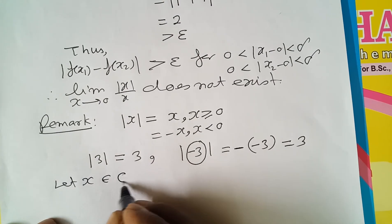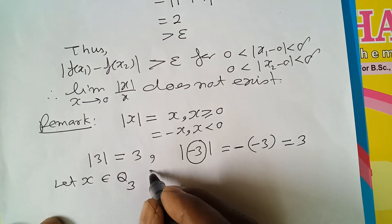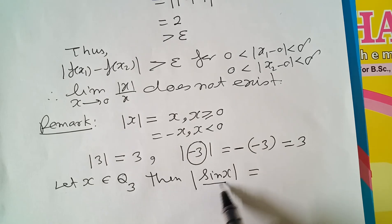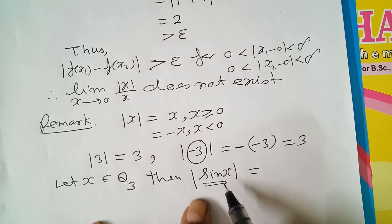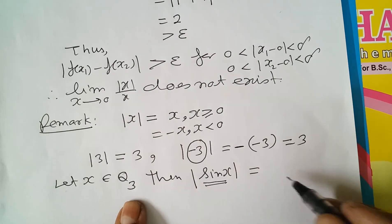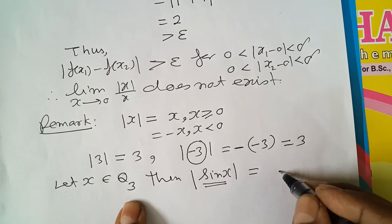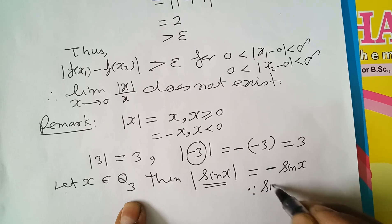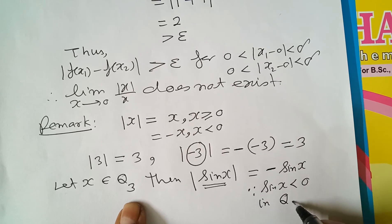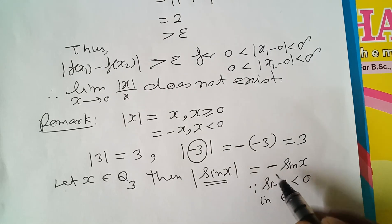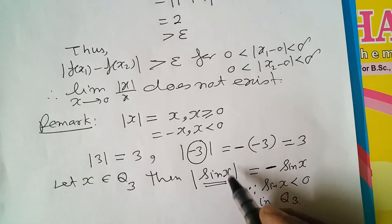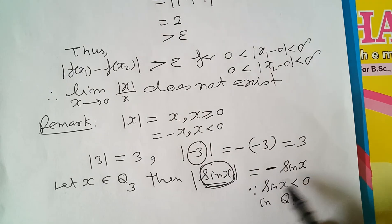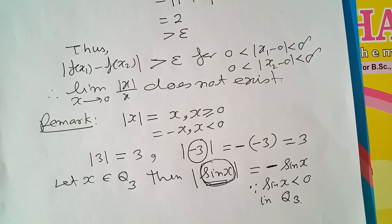अगर x को quadrant number 3 में लिया जाए और mod sin x evaluate करने को बोला जाए — तो mod के अंदर का यह number sin x देखने में positive लगता है, actually यह negative है क्योंकि third quadrant में sin x negative होता है। इसलिए mod के अंदर के इस number को copy करके minus sign लगा दीजिए — क्योंकि sin x is negative in quadrant number 3। तो mod sin x always plus sin x नहीं होता, कभी कभी यह minus sin x भी होता है। mod के अंदर वाला number अगर negative होगी तो mod को remove करके negative का sign लगाना है।